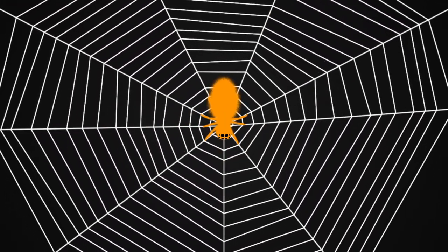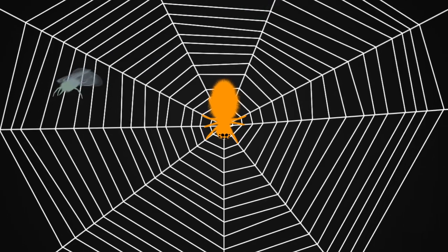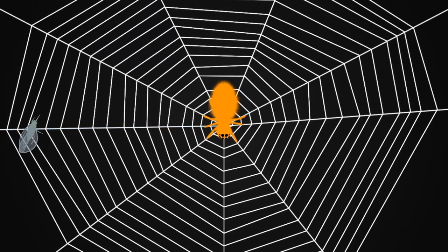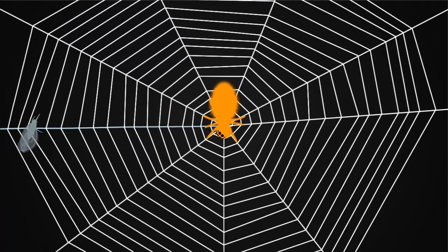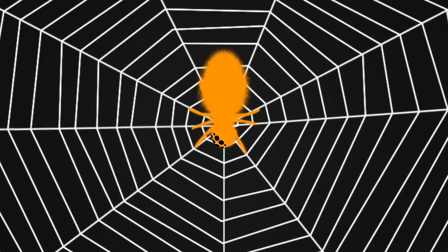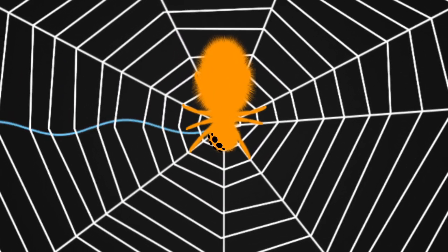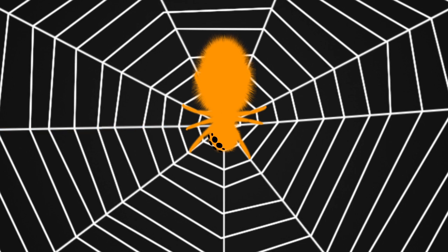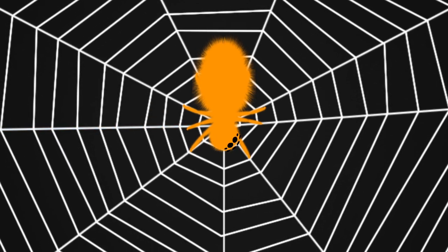When a bug hits the web, the spider can triangulate where it is by sensing the pattern of the vibrations. By plucking a thread and reading the nature of the vibrations that come back, the spider can tell the difference between a tasty meal and a potential mate.